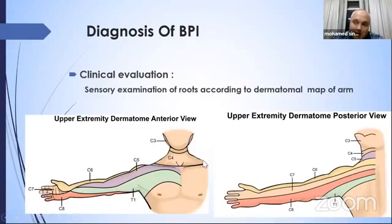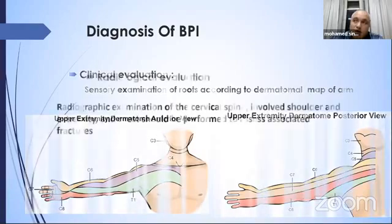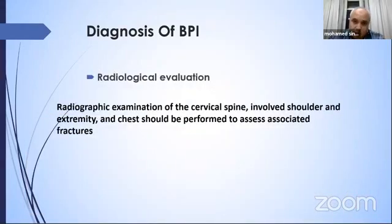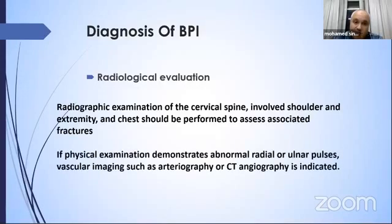Radiological examination of the cervical spine, shoulder, extremity, and chest should be performed to assess associated fractures — commonly in the transverse process of the cervical spine, clavicle, or first rib — evaluated through X-rays and CT. If physical examination demonstrates abnormal radial or ulnar pulse, given the 25% incidence of vascular injury, arteriography or CT angiography is indicated.